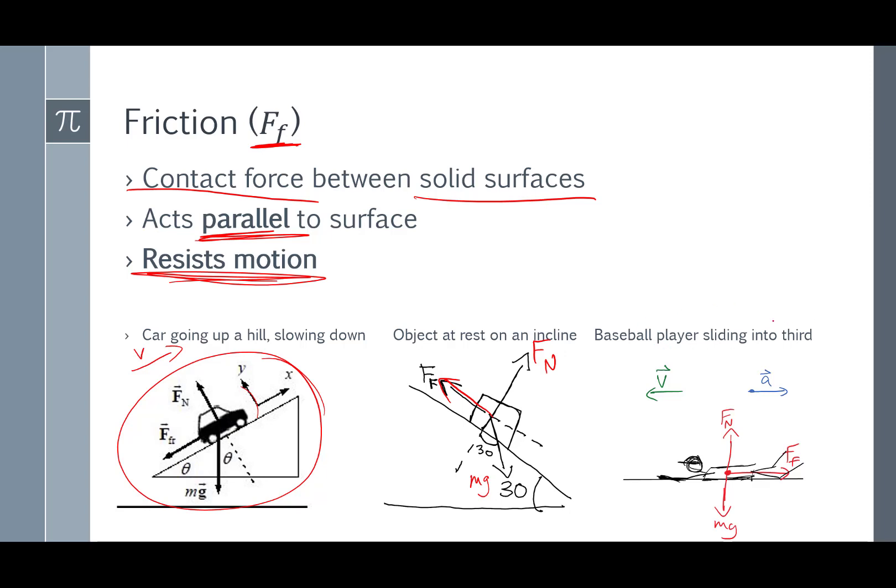A baseball player is sliding into third. The baseball player is moving to the left. Gravity pulls down on the baseball player, but the ground pushes up on the baseball player. And friction pushes to the right, which means it's trying to slow the baseball player down as it slides into third.